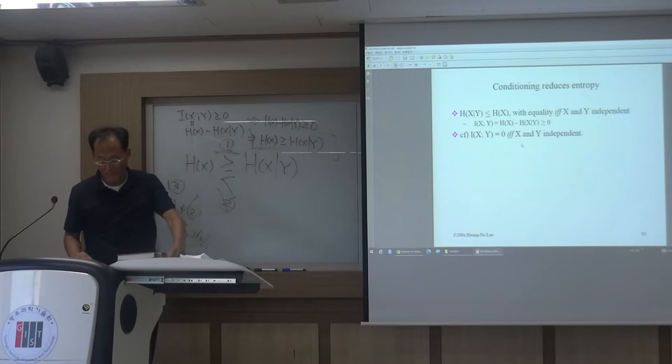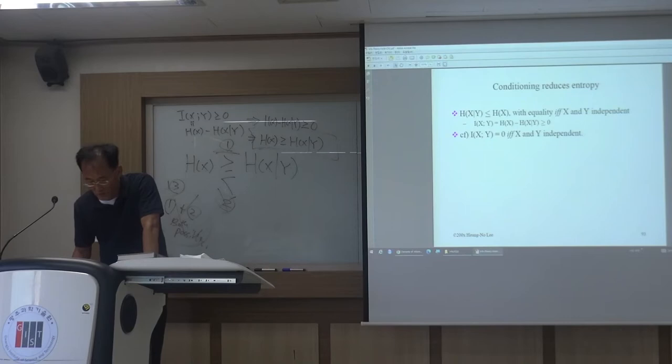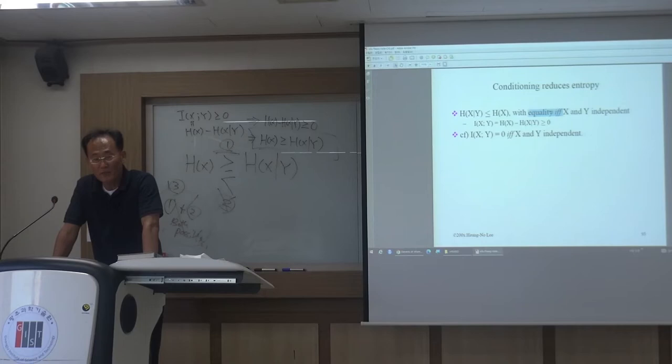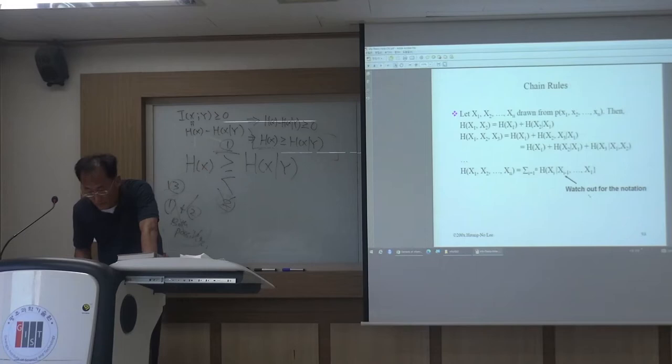Conditioning reduces entropy. The unconditioned entropy should be larger than or equal to the conditioned one. Equality holds if and only if X and Y are independent. We use 'if and only if' because we have already proved it — mutual information equals zero if and only if X and Y are independent.